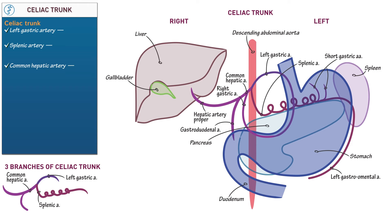Now return to the hepatic artery proper and show that it splits to form right and left hepatic arteries, which will continue to branch throughout the liver. Show that the right hepatic artery gives rise to the cystic artery, which travels to the gallbladder. Cystic refers to the gallbladder.